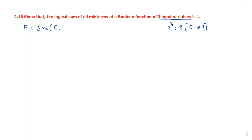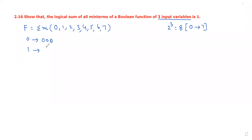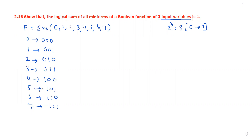So sigma M of 0, 1, 2, 3, 4, 5, 6, 7. Their binary forms are: 0 is 0 0 0, 1 is 0 0 1, 2 is 0 1 0, and so on up to 7, giving the equivalent binary form for 0 to 7.